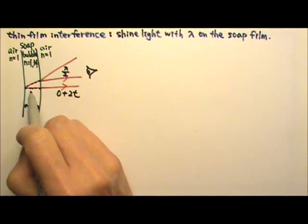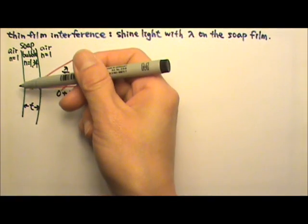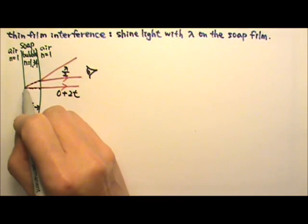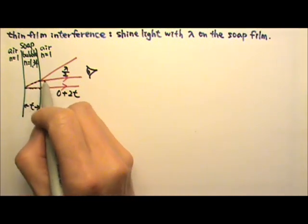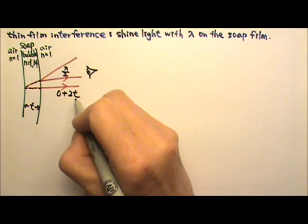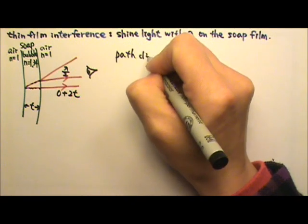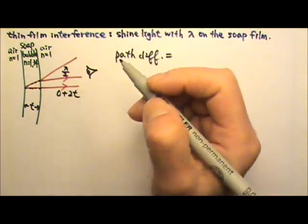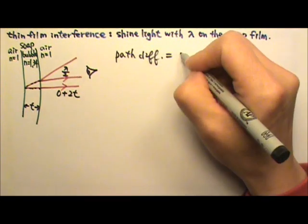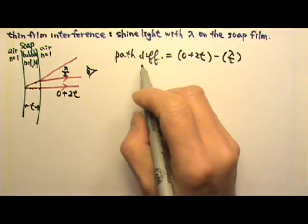It may look like the path is more than 2T, but we're talking about normal incidence — the light ray is going in perpendicular to the film and then bouncing back perpendicular to the film. We draw it at an angle to exaggerate the situation so we can see the two rays more easily. Now let's look at the path difference between the two rays. I always use the 2T side minus the other side.